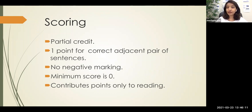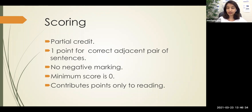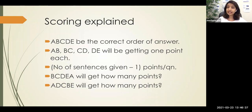The scoring is not for independent positions. The computer gives you one point for each correct adjacent pair of sentences. There is no negative marking; minimum score is zero. To make it clearer: let's assume we have five sentences — A, B, C, D, E — and the correct order is A, B, C, D, E. So A first, B second, C third, D fourth, and E fifth.